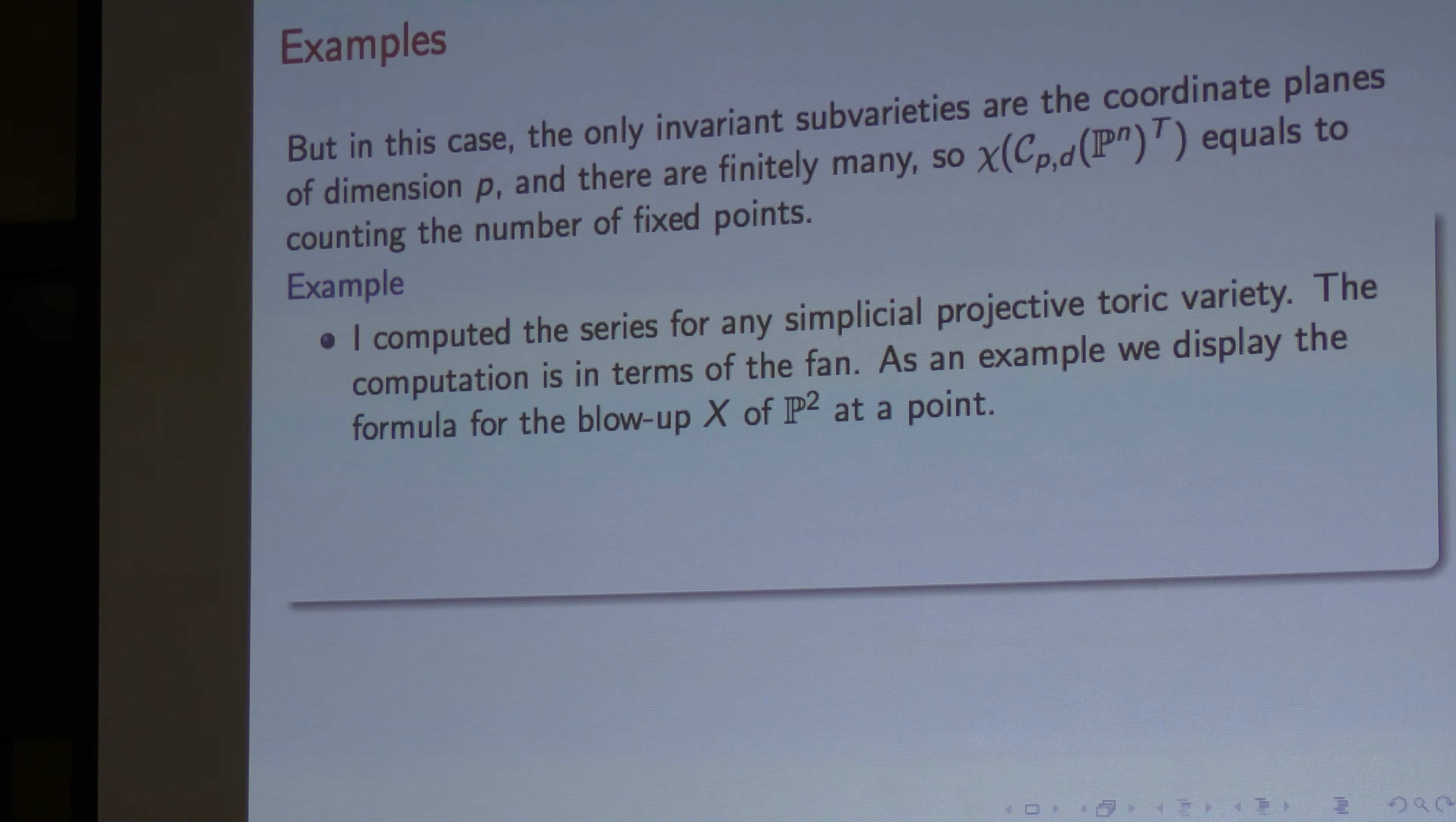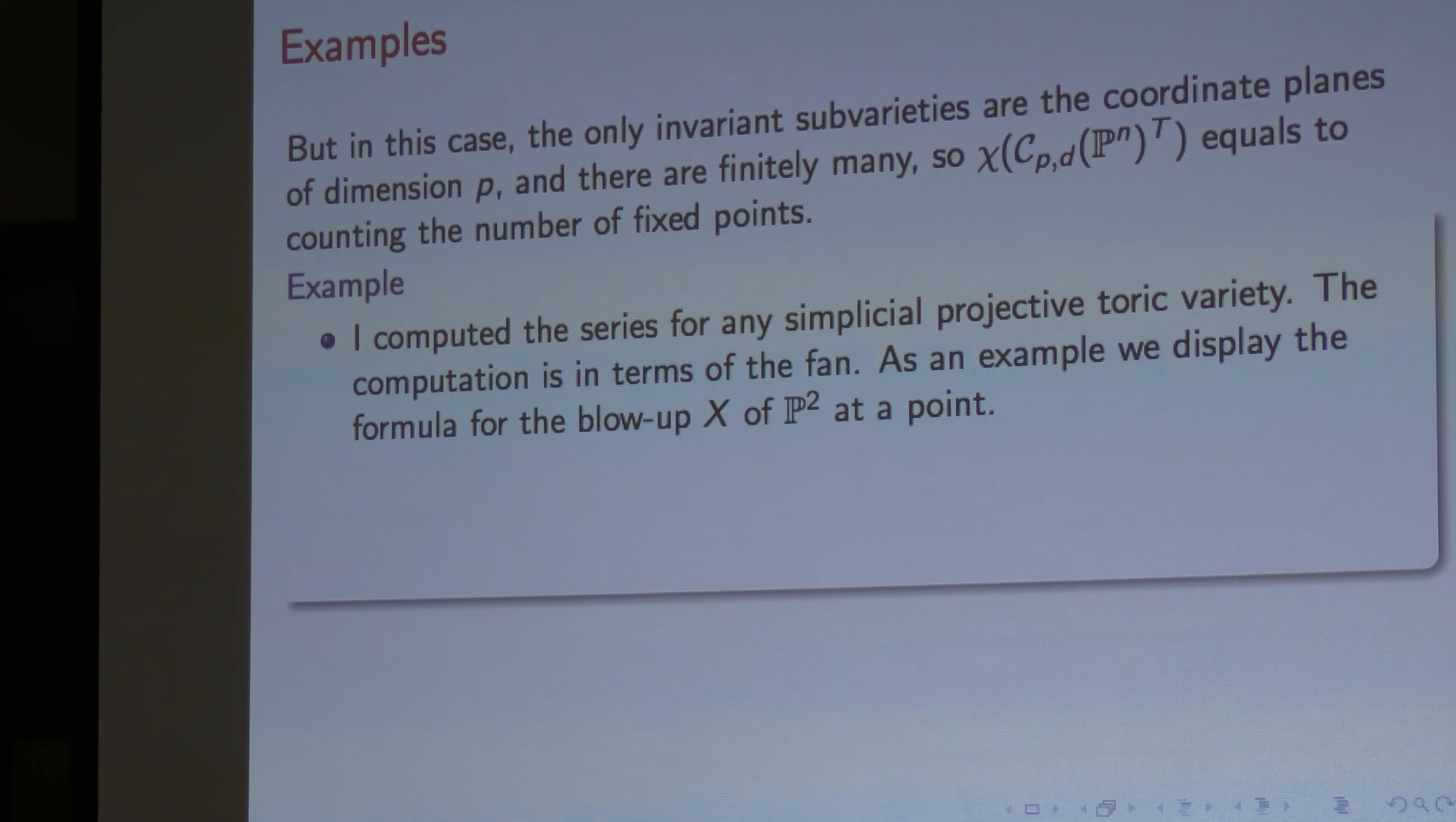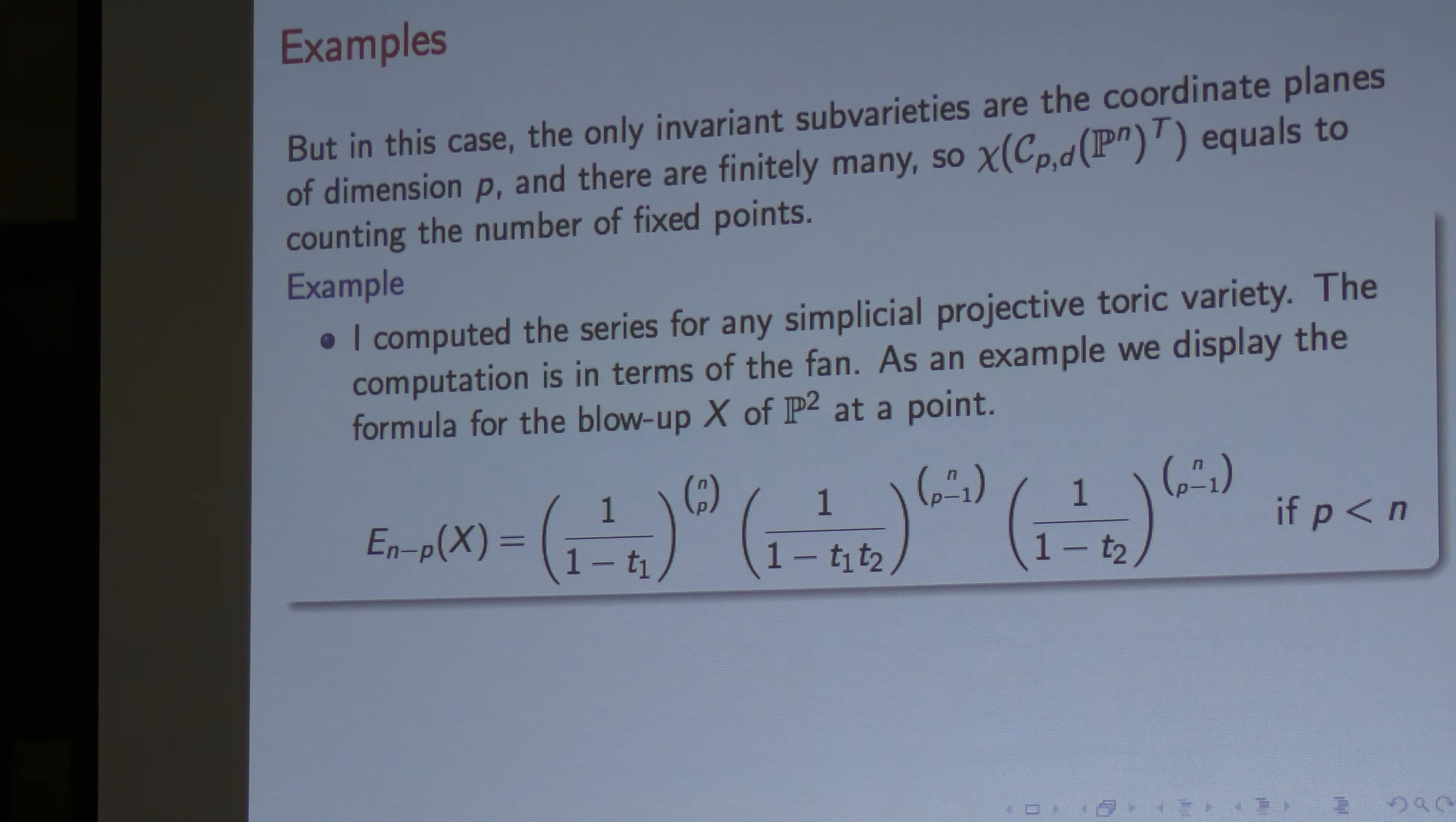We also are able to compute the Euler characteristic of X. These two cases are in the projective space. So, the only cases that we know the Euler characteristic series for all dimensions are projective space and Grassmannians. And as an example, we take the blow-up of P2 at one point and already the formula ends. So, it's nice, but not so simple.